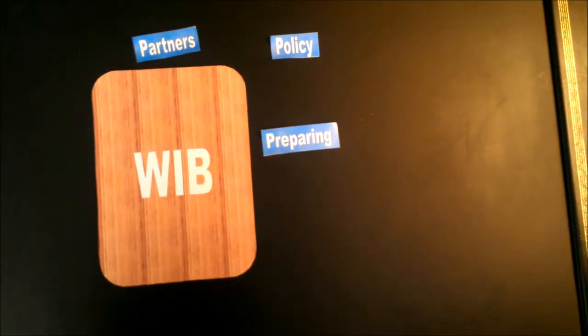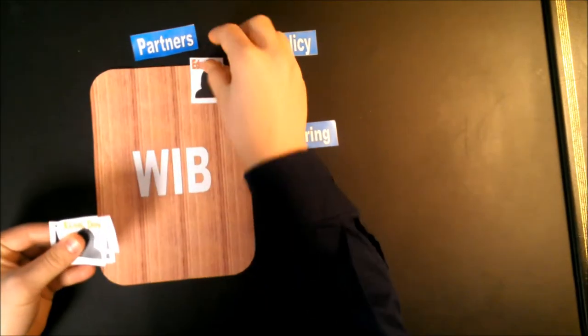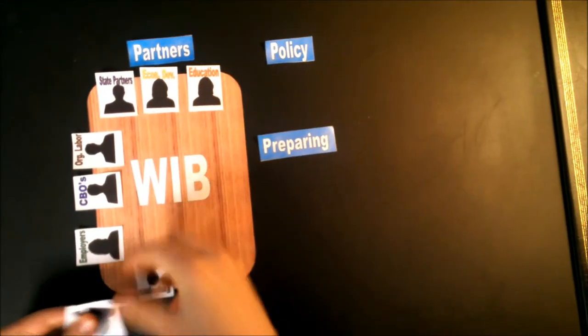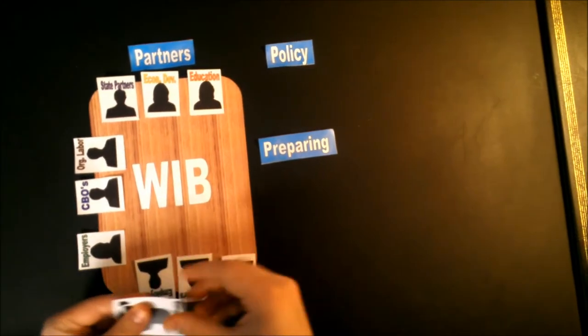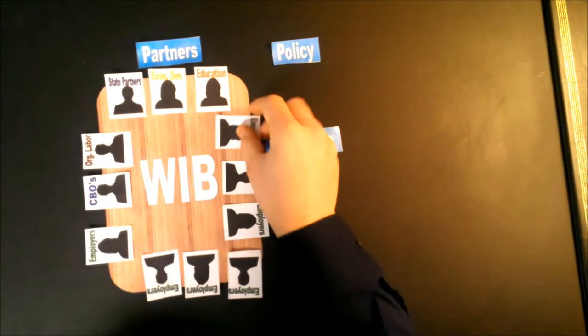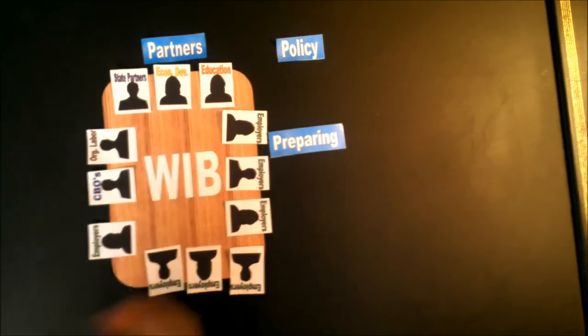The Workforce Investment Board, or WIB, brings together at one table the key stakeholders involved with workforce development, including representatives in education, economic development, state agency partners, organized labor, community-based organizations, and most importantly, businesses, which make up at least 51% of the board.